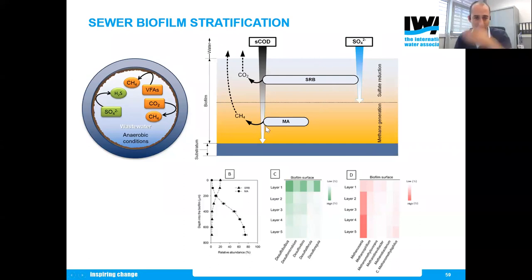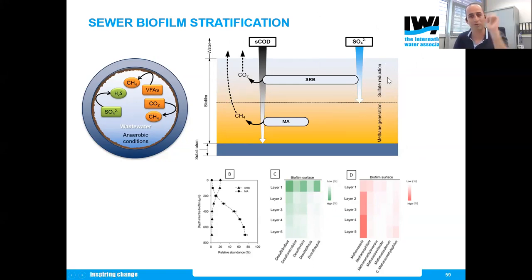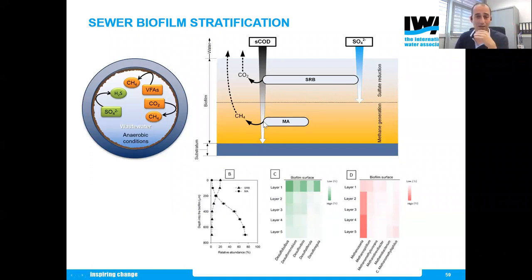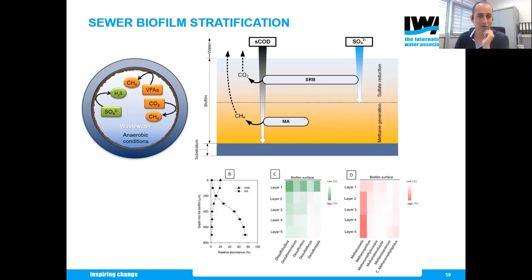The methanogen archaea tend to sit in the lower, inner parts of the biofilm because they are more sensitive and less robust than sulfate-reducing bacteria. This configuration protects the methanogens, and because organic matter can diffuse all the way through the biofilm, they get their substrate and transform it to methane, which is then dissolved into the liquid phase. We divided the biofilm into five millimeter-thick layers and confirmed that sulfate-reducing bacteria dominate the outer sections while methanogens dominate the inner sections.